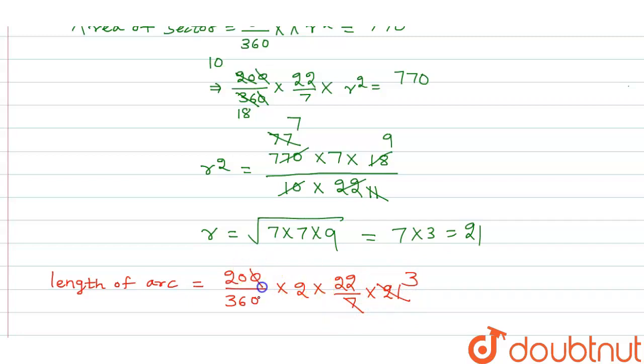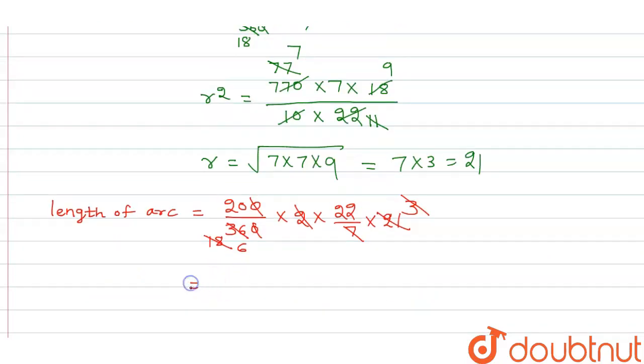And this is 10, this is 18, and this is equal to 6. So what we get is, if this is 10, this is 3, so 10 into 22 into 2 upon 3.